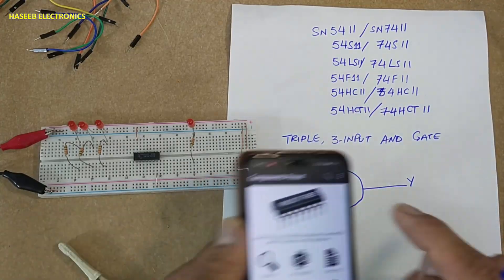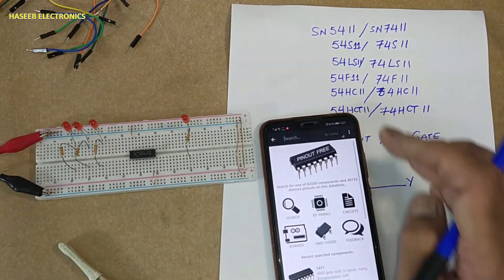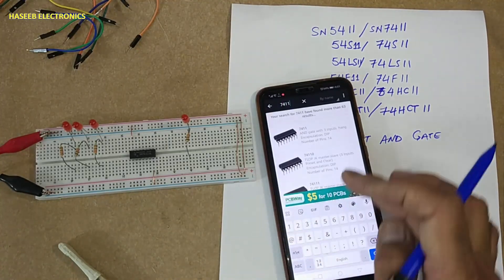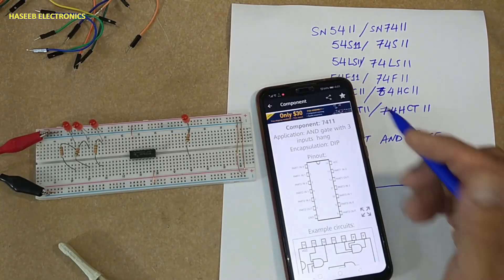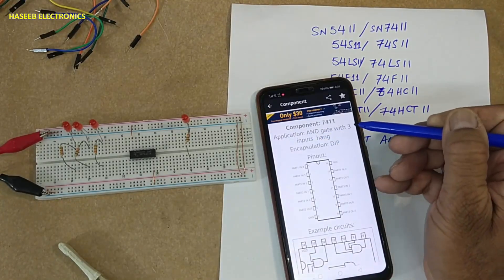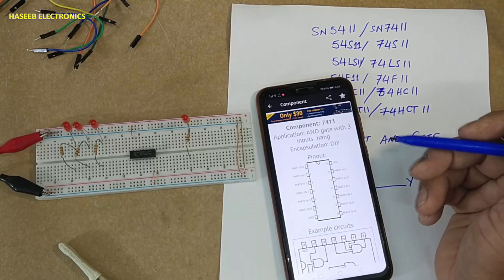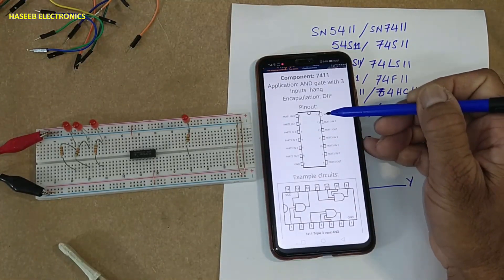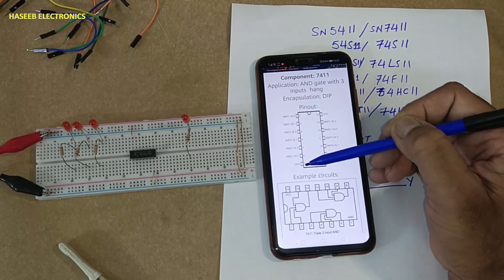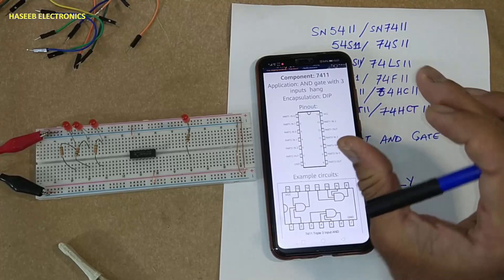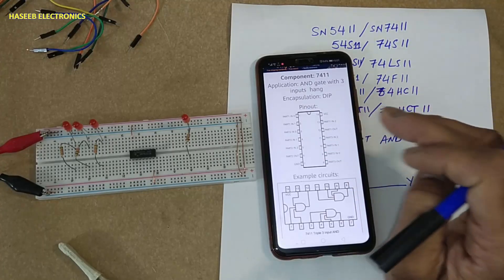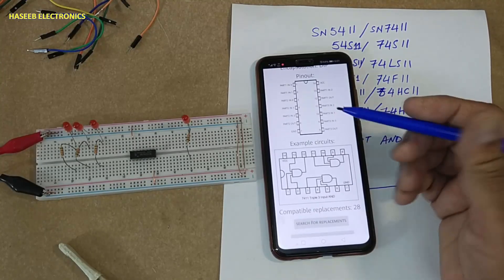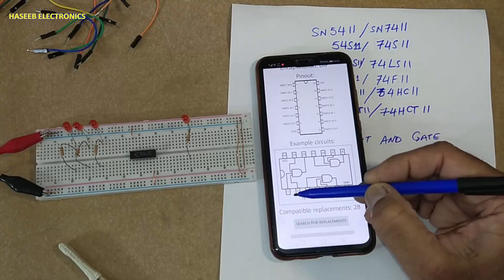If we see the pinout, 7411 is an AND gate with three inputs. Pin number 14 is VCC, pin number 7 is ground. Five volt supply voltage, maximum 5.25, minimum 4.75. Three inputs: pin number 1, 2, and 13 are inputs for the first gate.